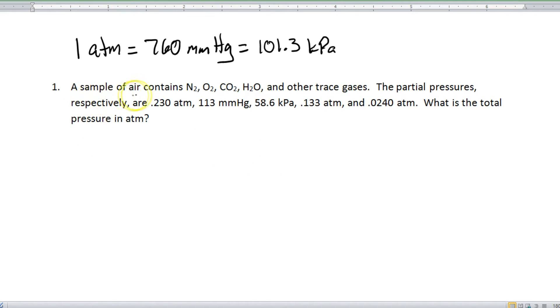Alright, so let's read the first question here. A sample of air contains nitrogen, oxygen, carbon dioxide, water, and other trace gases. The partial pressures, respectively, are 0.230 atm, 113 mmHg, 58.6 kPa, 0.133 atm, and 0.0240 atmospheres. What is the total pressure in atmospheres?